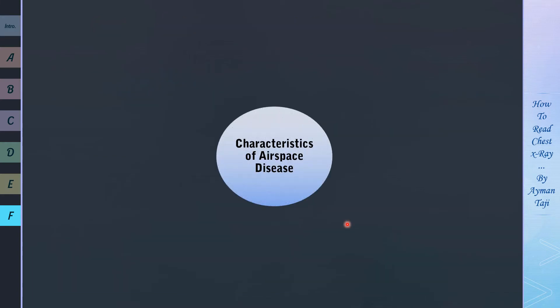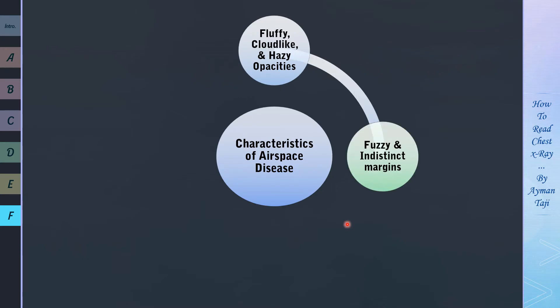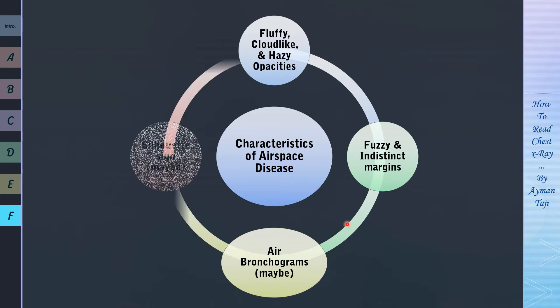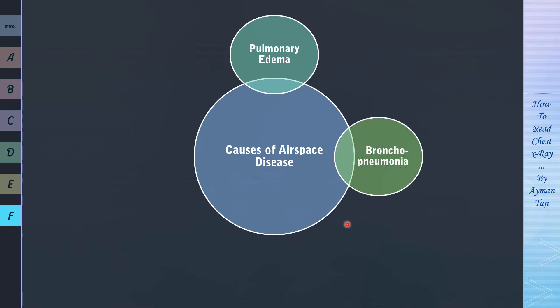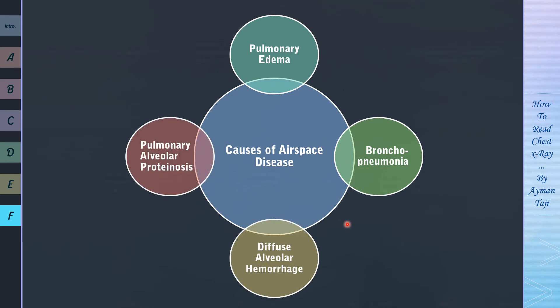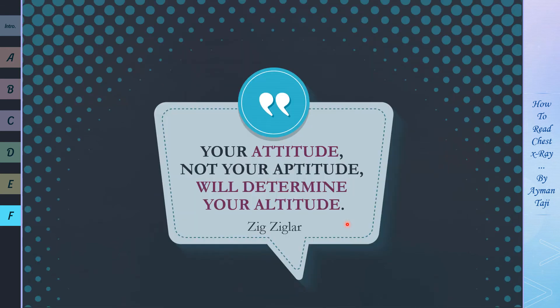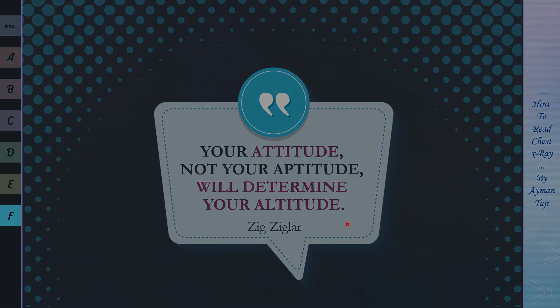To recap: characteristics of airspace disease are fluffy, cloud-like and hazy opacities with fuzzy and indistinct margins, and sometimes air bronchograms or the silhouette sign. Causes of airspace diseases include pulmonary edema, pneumonia where alveoli are filled with inflammatory exudate, diffuse alveolar hemorrhage, or rarely pulmonary alveolar proteinosis. We are done with reticular and alveolar patterns, and in the next lecture we'll move on to the nodular pattern. See you next time.